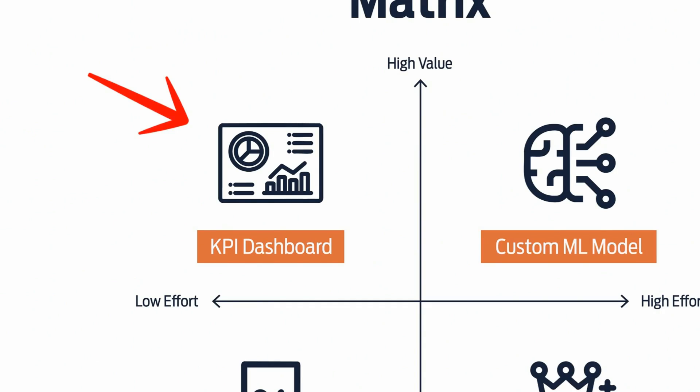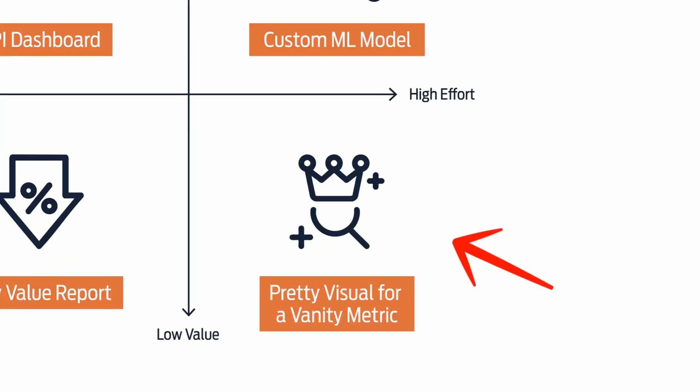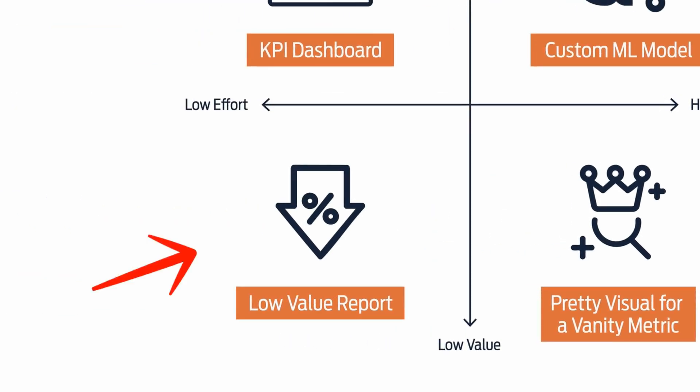The second quadrant is high value, high effort — it requires more work but the return on investment is also high; these are your strategic projects. The third is low value, high effort — minimal return but a lot of effort and time. The fourth is low value, low effort — it doesn't deliver any value, so don't waste time on those.